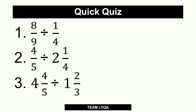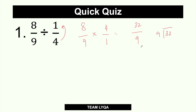Alright, let's see how you did. The first problem: 8/9 divided by 1/4. First, flip the second fraction. So 8/9 times 4/1. That gives you 32 over 9. Since there are no common factors to reduce, convert to a mixed number: 9 goes into 32 three times (27), with a remainder of 5. So the answer is 3 and 5/9.